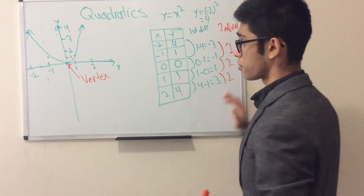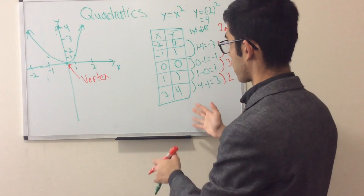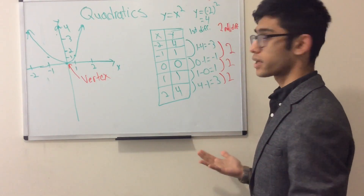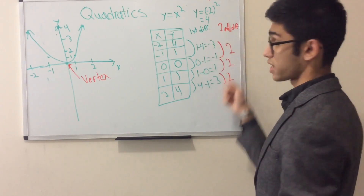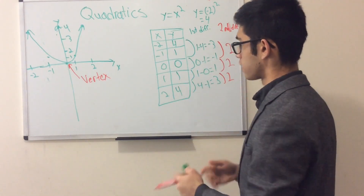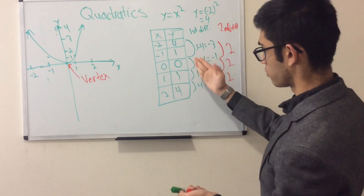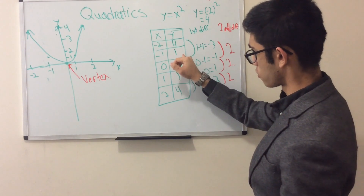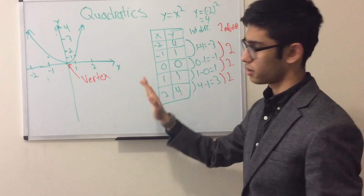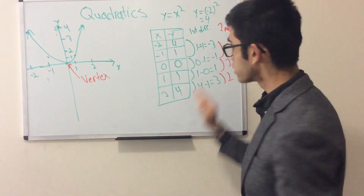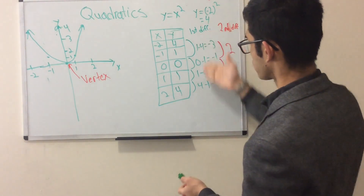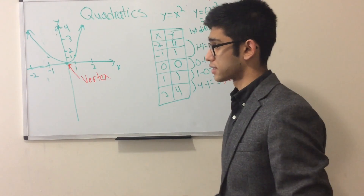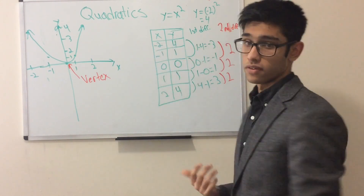So for quadratic functions, second differences are always constant while first differences are not. If you're given a table of values and asked whether it's linear or quadratic, calculate the first differences and then the second differences. If the first differences are constant it's linear; if the second differences are constant it's quadratic. That's a reliable method.